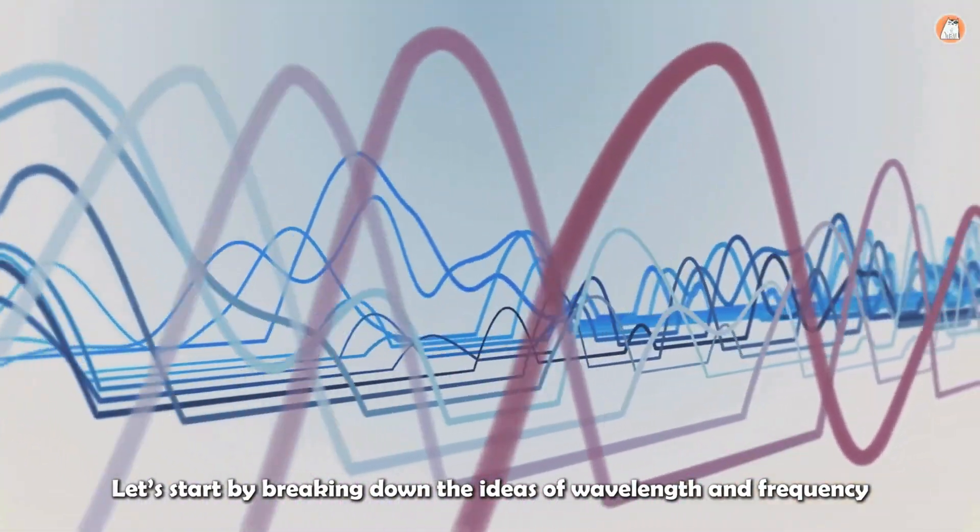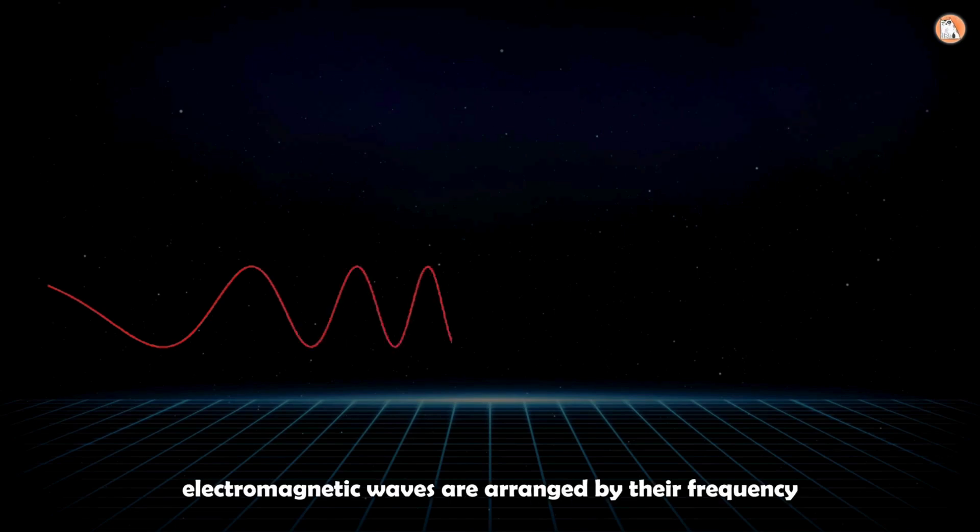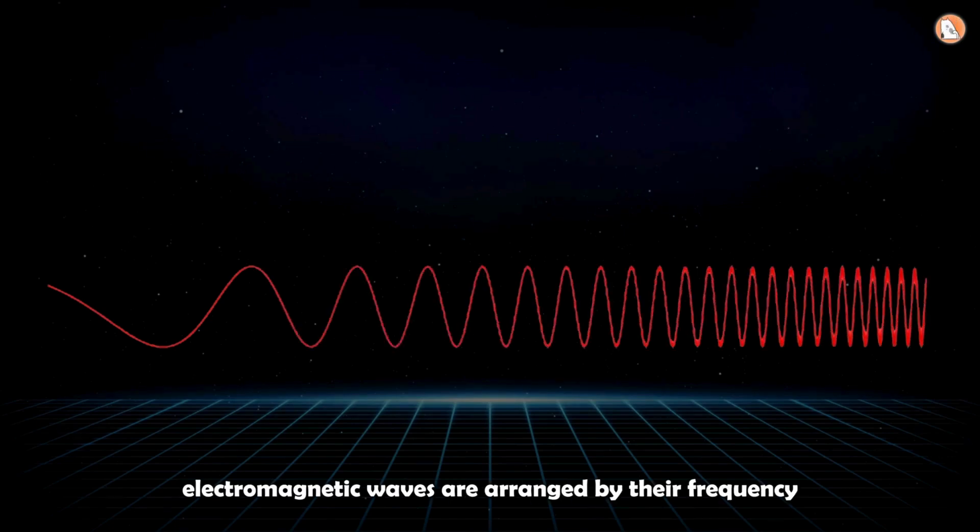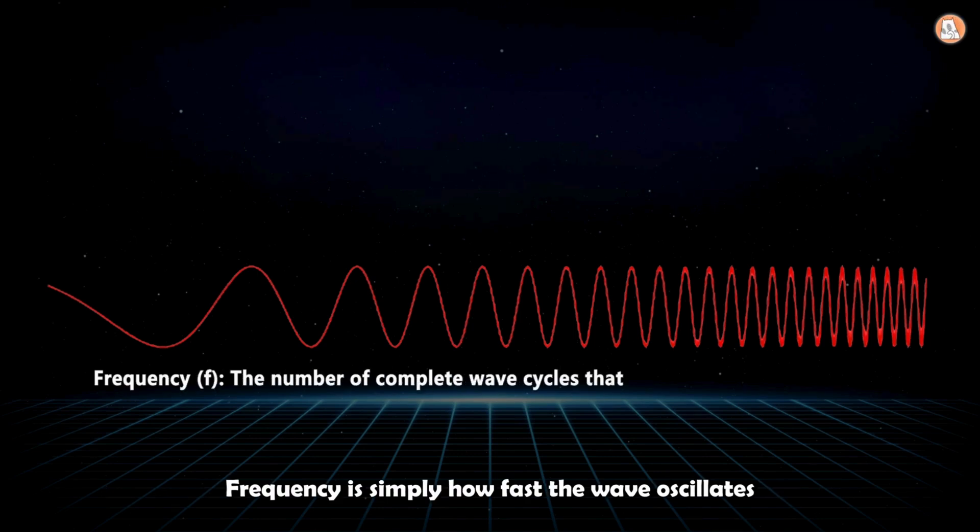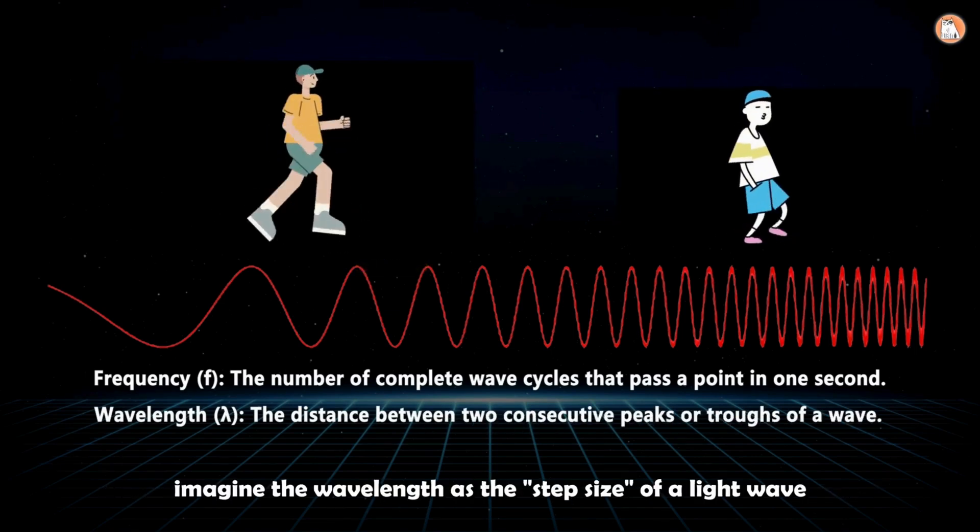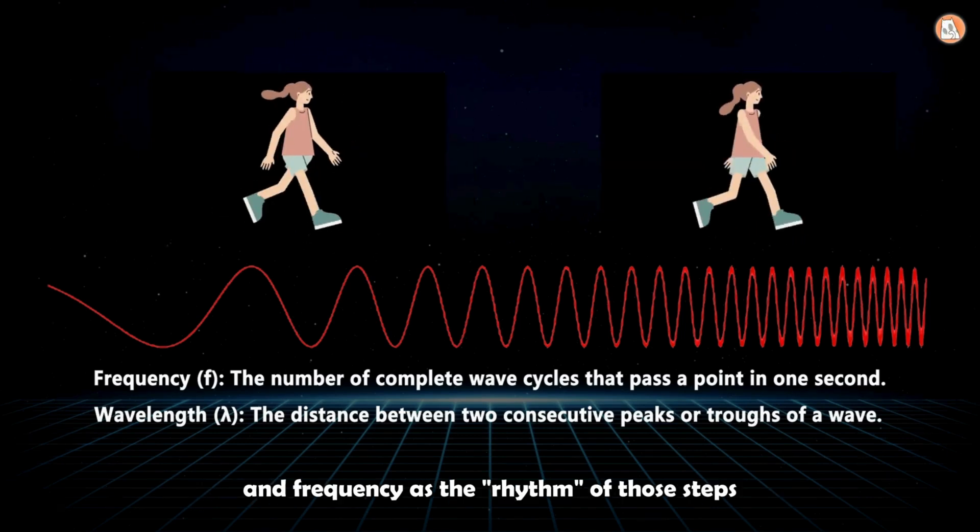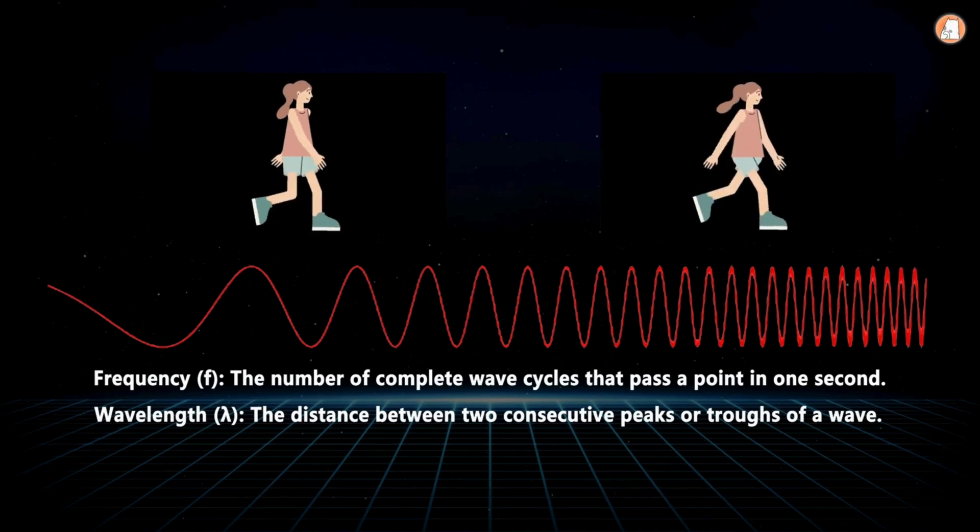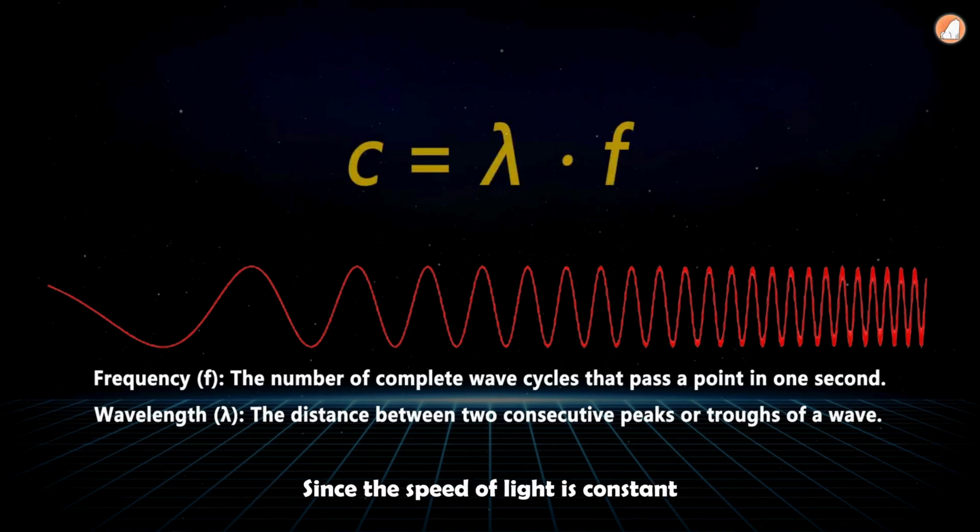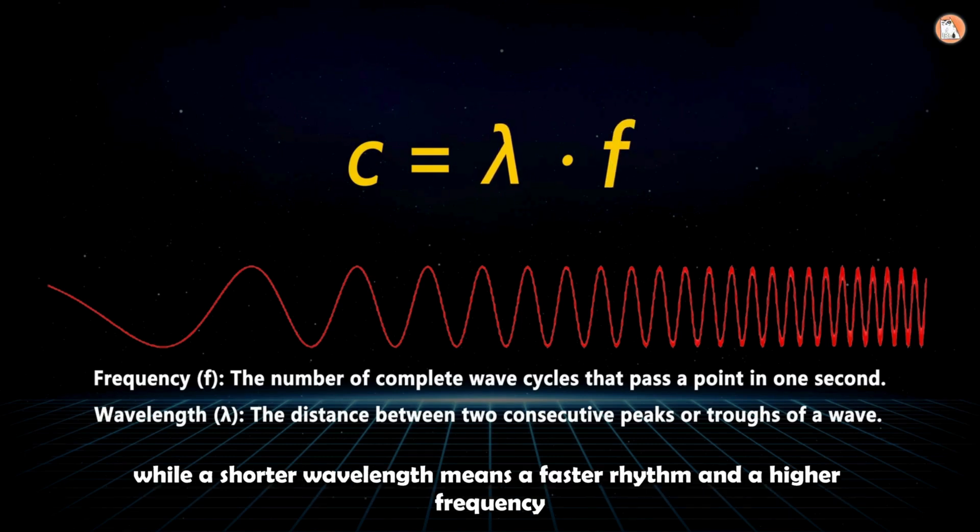Let's start by breaking down the ideas of wavelength and frequency. In this diagram, electromagnetic waves are arranged by their frequency. Frequency is simply how fast the wave oscillates, while wavelength is the distance between two consecutive wave crests. To make this clearer, imagine the wavelength as the step size of a light wave, and frequency as the rhythm of those steps. Since the speed of light is constant, a longer wavelength means a slower rhythm and a lower frequency, while a shorter wavelength means a faster rhythm and a higher frequency.